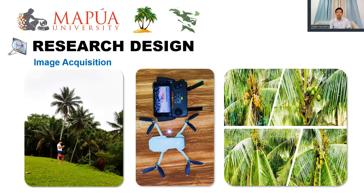A DJI Mini SE was used to capture the coconut fruit images to build the custom dataset. It is a lightweight drone with a 12-megapixel camera, having a resolution of 4000 by 2250 for still images in JPEG format and video resolution of 2720 by 1530 in MP4 format. Coconut images were captured from coconut farms in Lipan, Camali, Calbayog, where coconut trees are at almost similar heights. UAV flights were conducted on sunny weather from 9am to 11am.